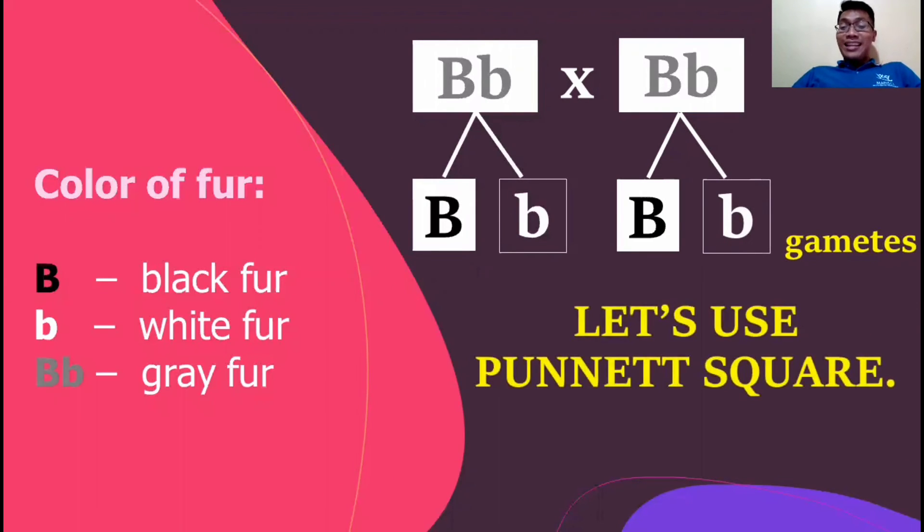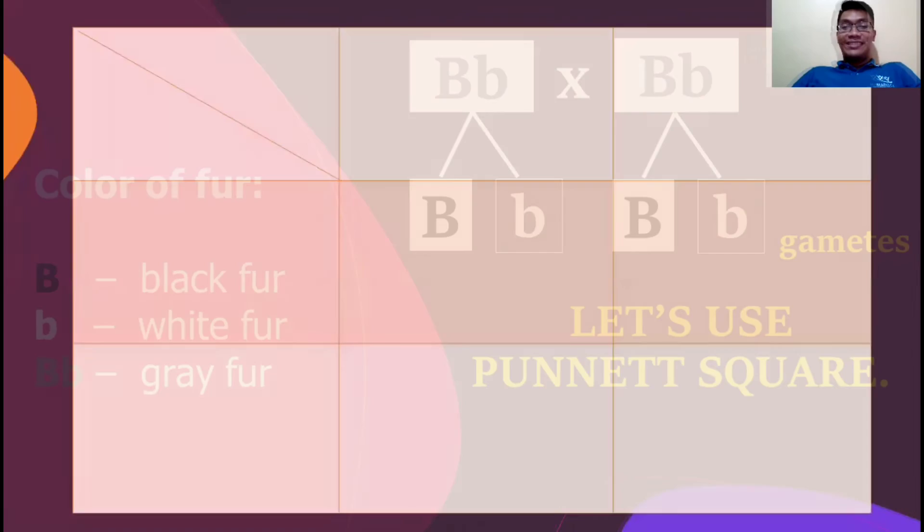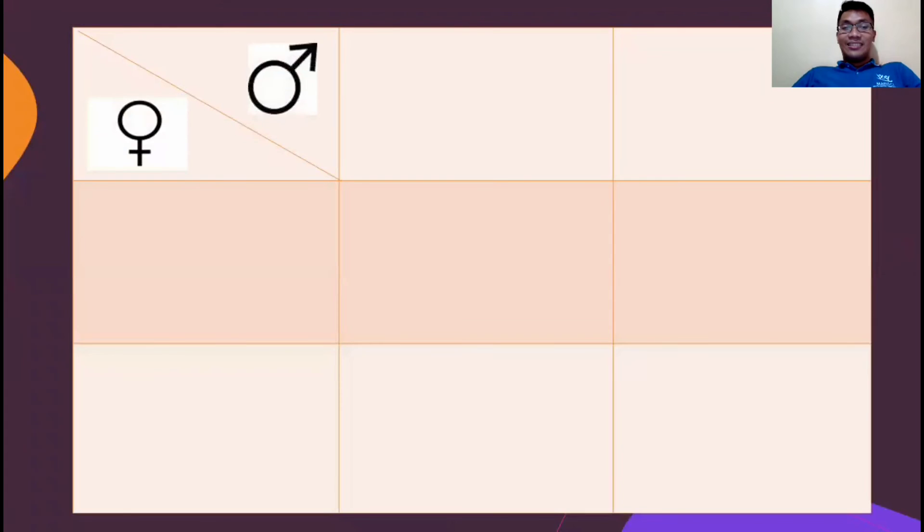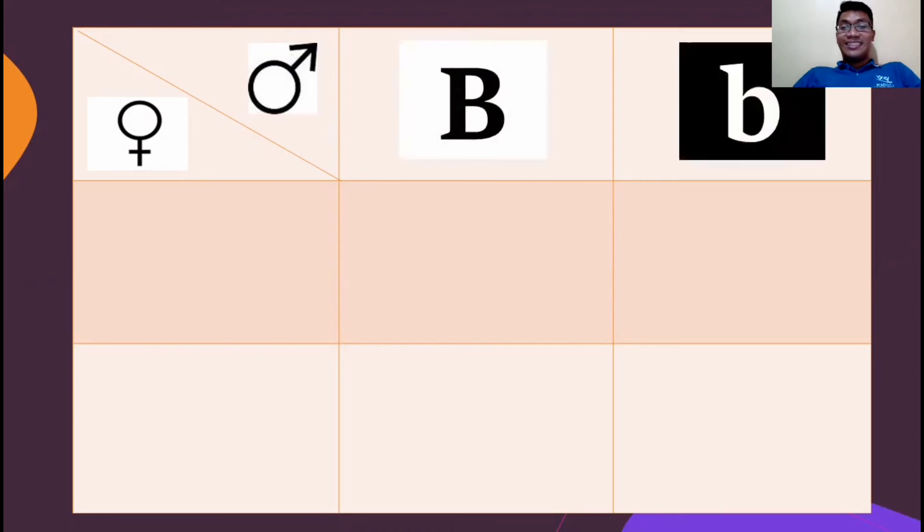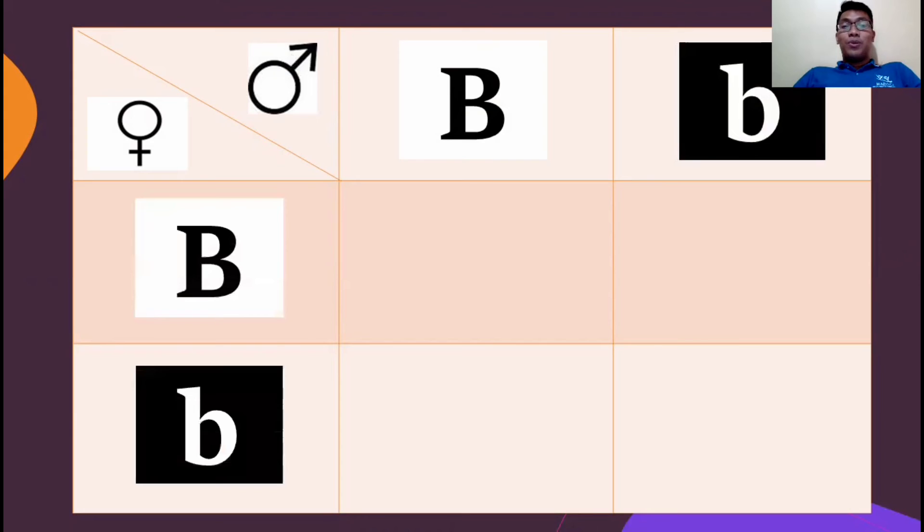So for analysis, let's use the Punnett square. This symbol is for male, so we will just assume that one is of course male, then the other one is female. So both of them produce a capital B and small b. Let's use this for our analysis.